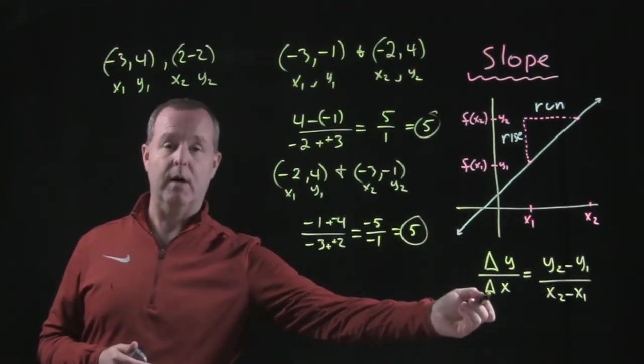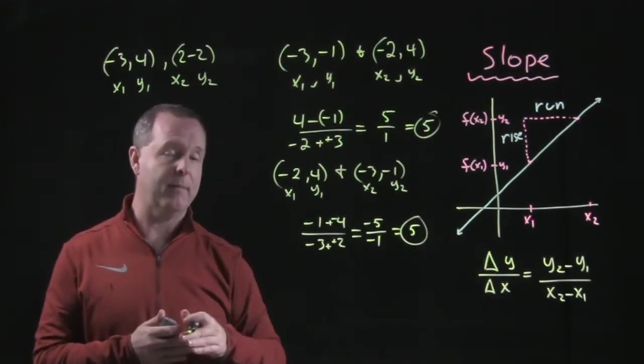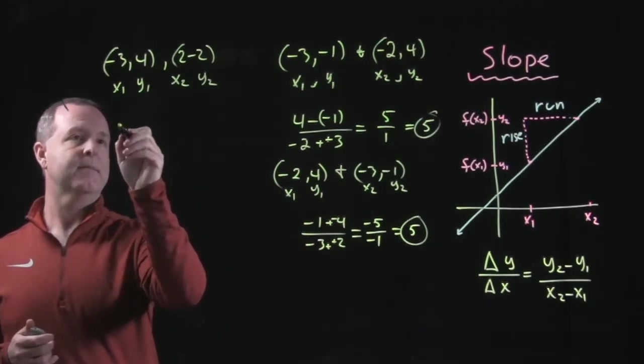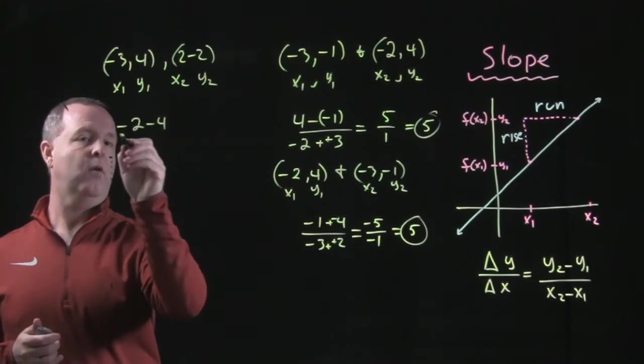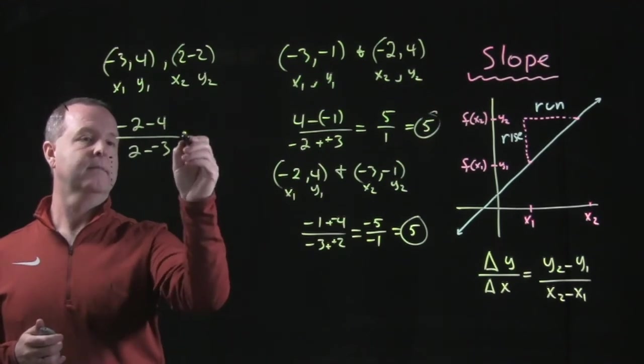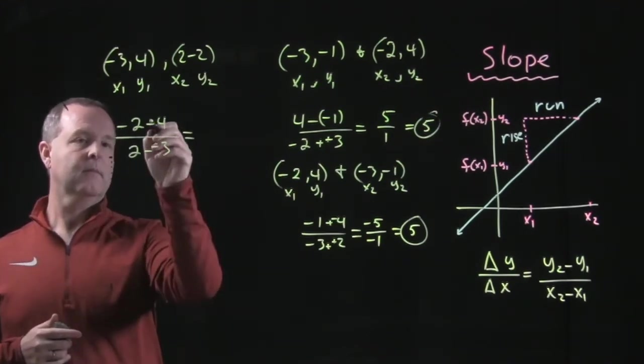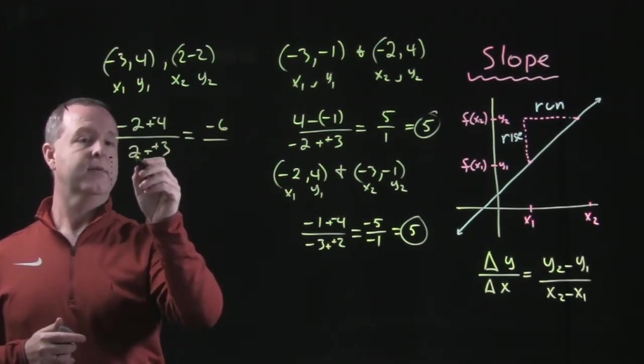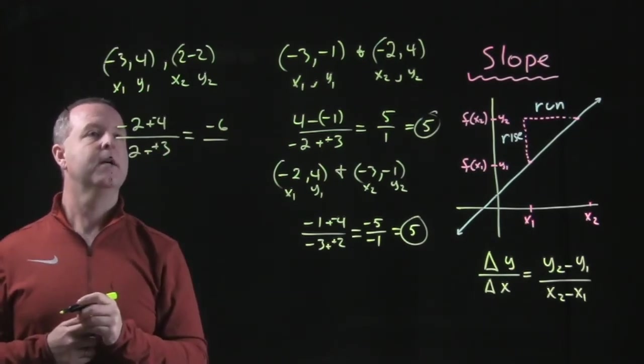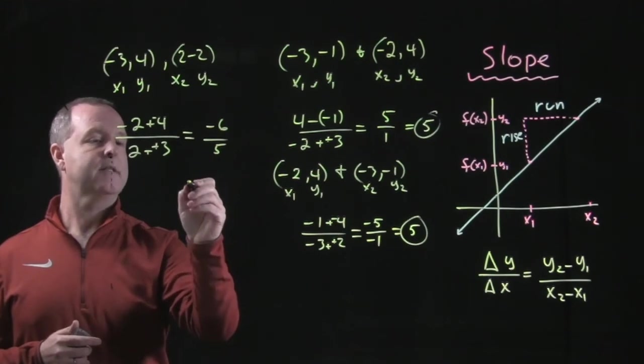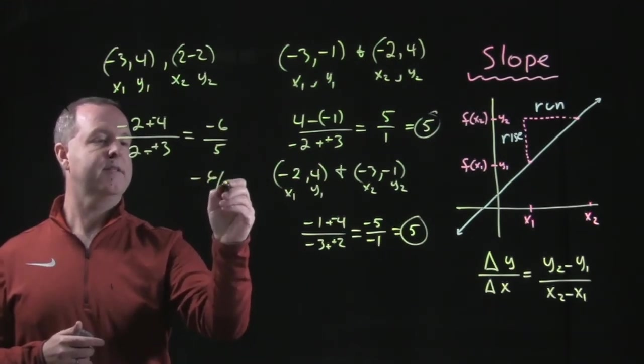Look at our model of slope. Slope again was my rise over my run, my change in my height over my change in my run, or my distance, horizontal distance. So this becomes negative 2 minus 4 all over 2 minus a negative 3. That becomes negative 6 all over, 2 minus a minus 3 gives me 5. So I have a slope of negative 6 fifths.